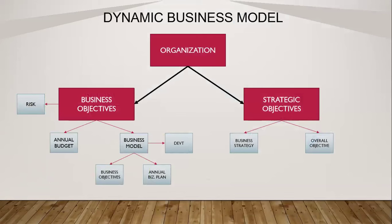In a dynamic business model, organizations establish two objectives: the business objectives and the strategic objectives. In risk management, we ensure that everything is manageable and that they can materialize their objectives — whether business or strategic.